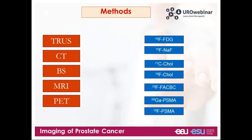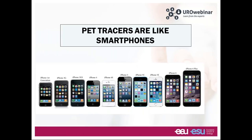PET itself is just an acronym indicating a method, but you have to specify which tracer you are using. On the right, you can see the many different radiopharmaceuticals that have been proposed to study prostate cancer. I will try to convince you, especially if you're a clinician, that PET tracers could be something like smartphones — every year you can have a new one, and you can be forced to move to a new one. But at the same time, there are very good points in having new possibilities given by innovative radiotracers.